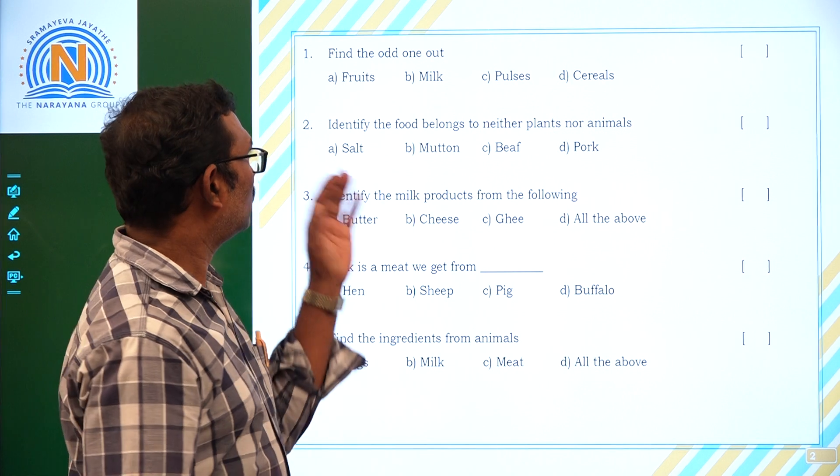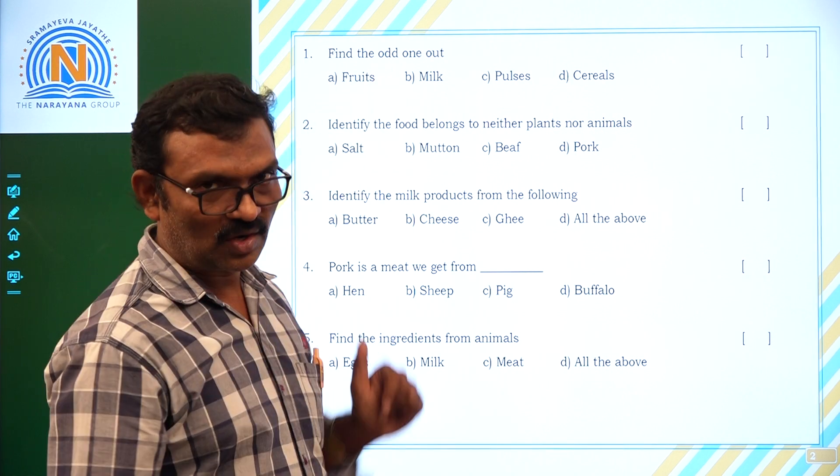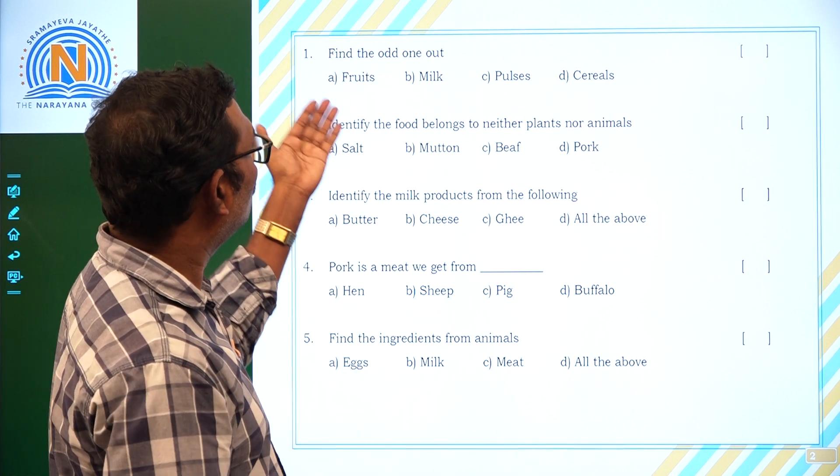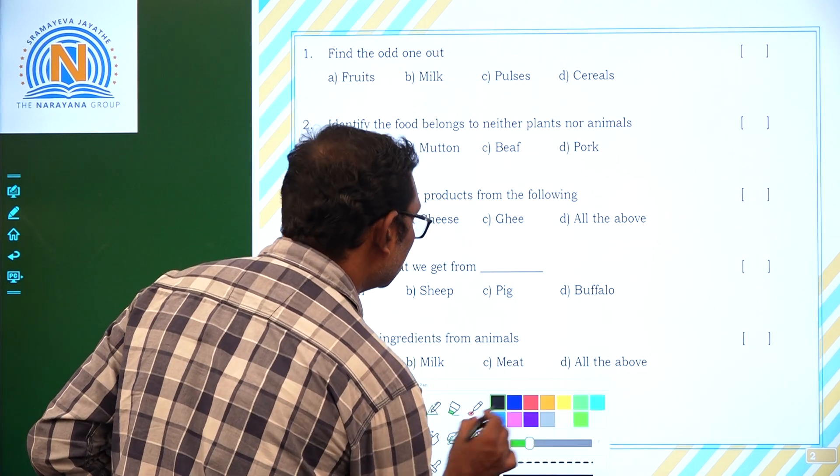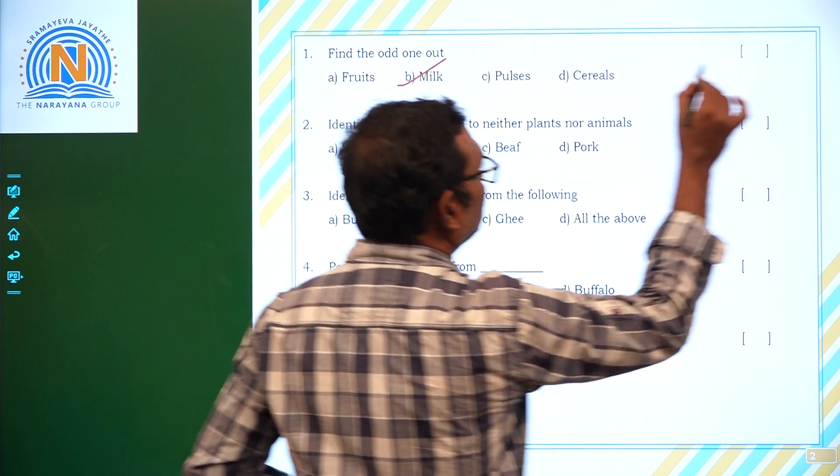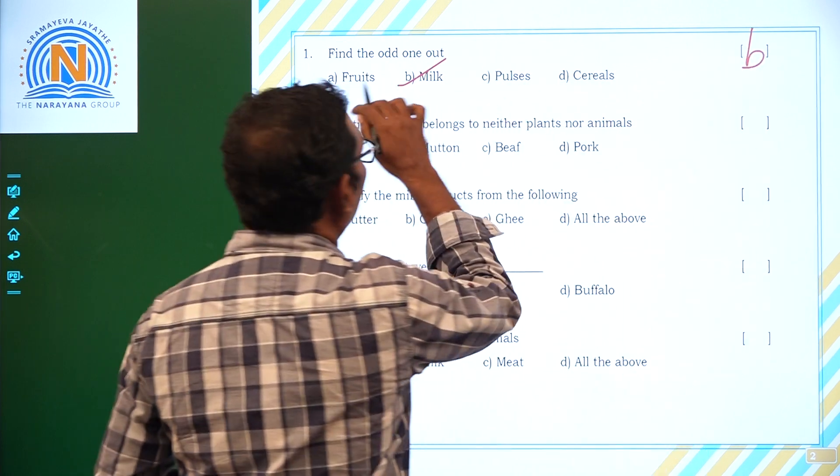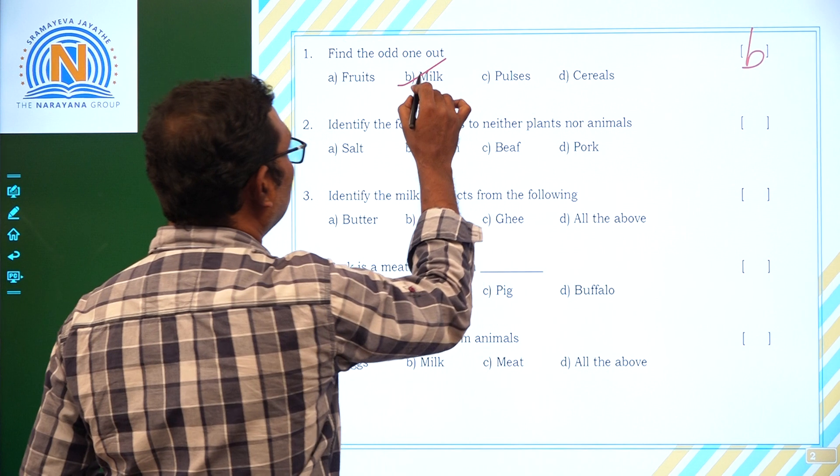Let us see what are the questions and their answers. Here choose the correct answers. The first one is find the odd one out. Which one is odd here? Fruits, milk, pulses, shells. Yes, definitely it is milk only. B. Because these are all solid foods and this is only liquid food.